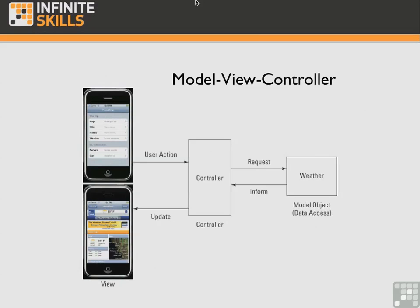View objects display things on the screen and respond to user actions — pretty much anything you see is a kind of view object: the window, the controls. Your views know how to display information received from the model object and how to get any input from the user the model may need, but the view itself should know nothing about the model. You can think of the view as a television screen that doesn't care about what program it is showing or what channel you just selected. The UIKit framework provides many different kinds of views. If the view knows nothing about the model and the model knows nothing about the view, how do you get data and notifications to pass from one to the other?